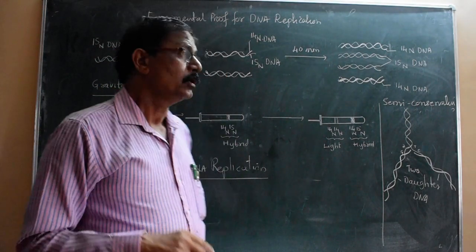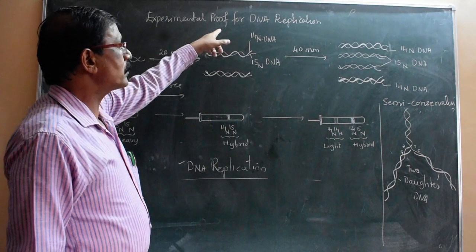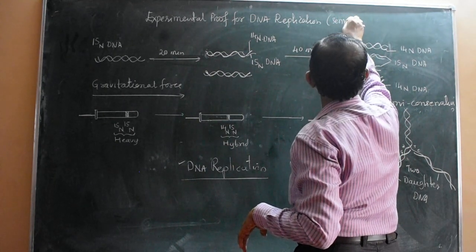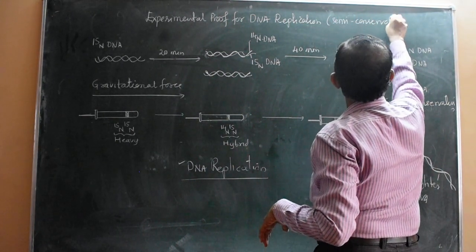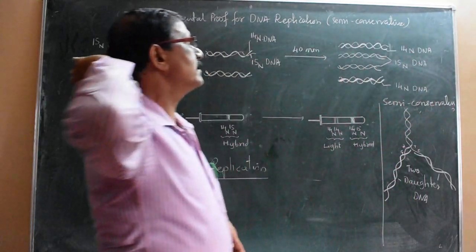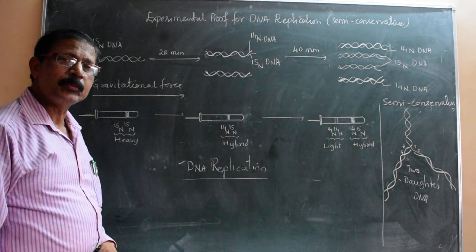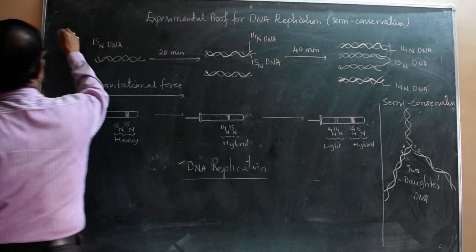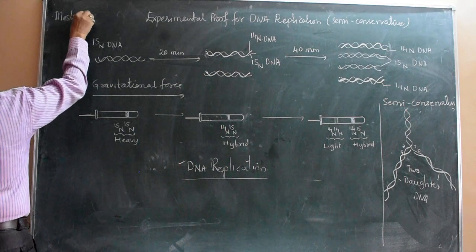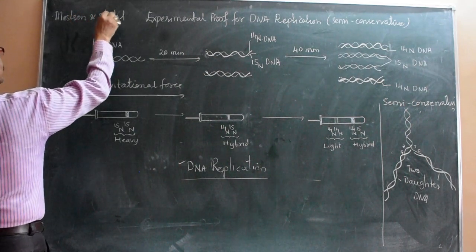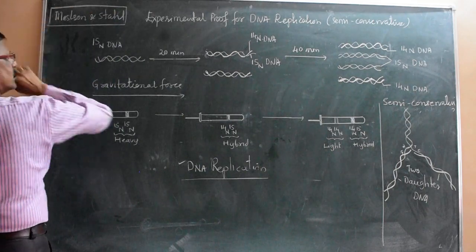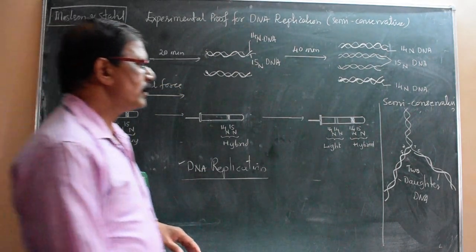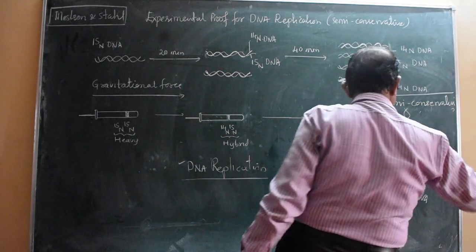Matthew Meselson and Franklin Stahl gave the experimental proof for DNA replication being semi-conservative. Meselson and Stahl first time proved semi-conservative DNA replication by giving a specific experiment. In their experiment, what they did - first of all, they grew E. coli bacteria.